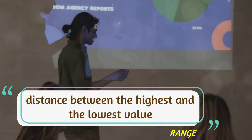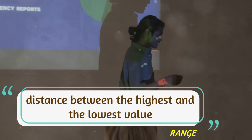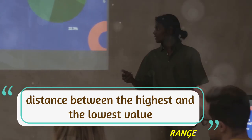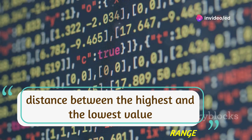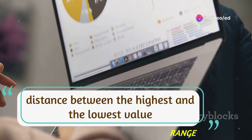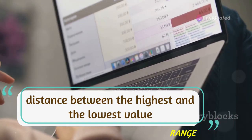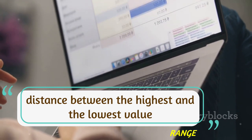The simplest measure is the range, which is the difference between the highest and lowest scores in a dataset. For example, in a dataset with values 2, 4, 6, 8, 10, the range would be 8, calculated by subtracting the minimum value 2 from the maximum value 10.